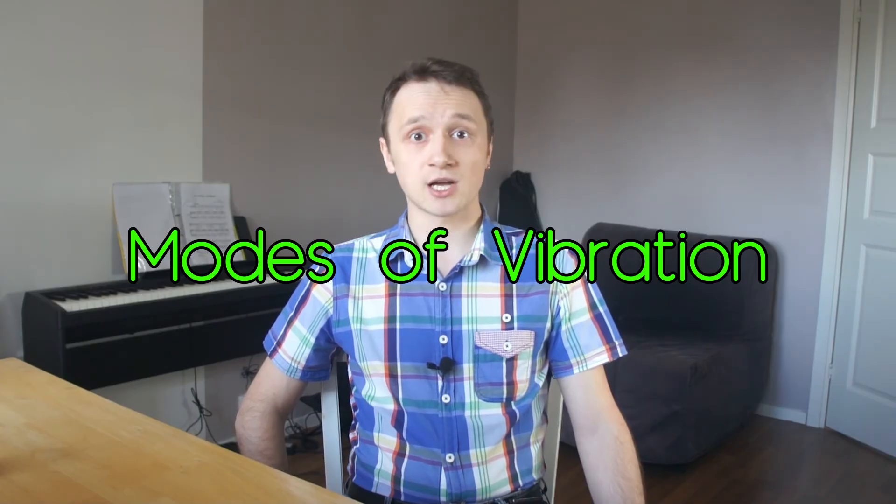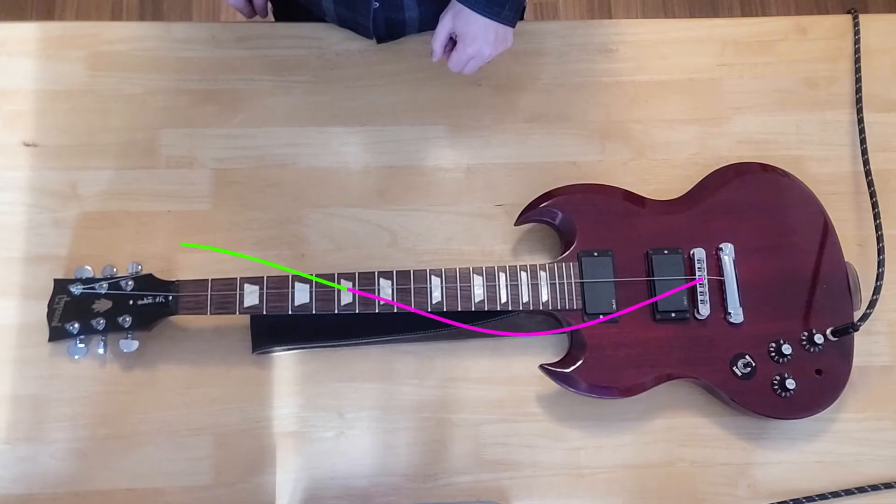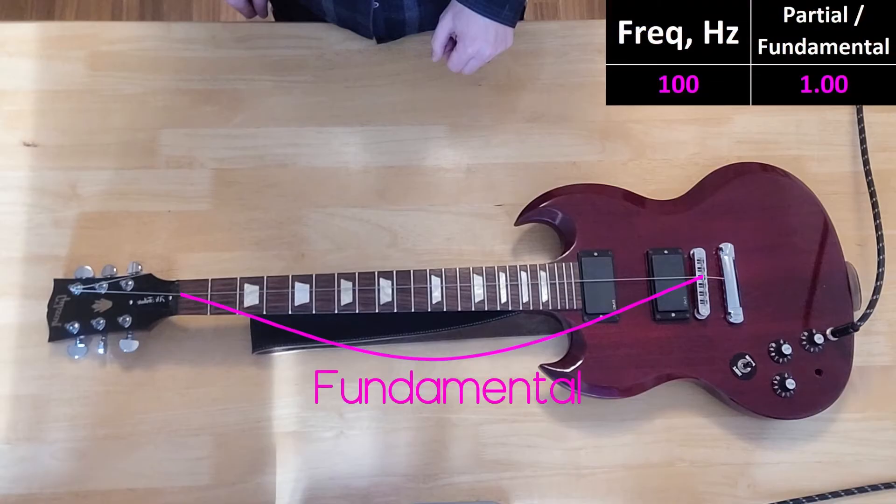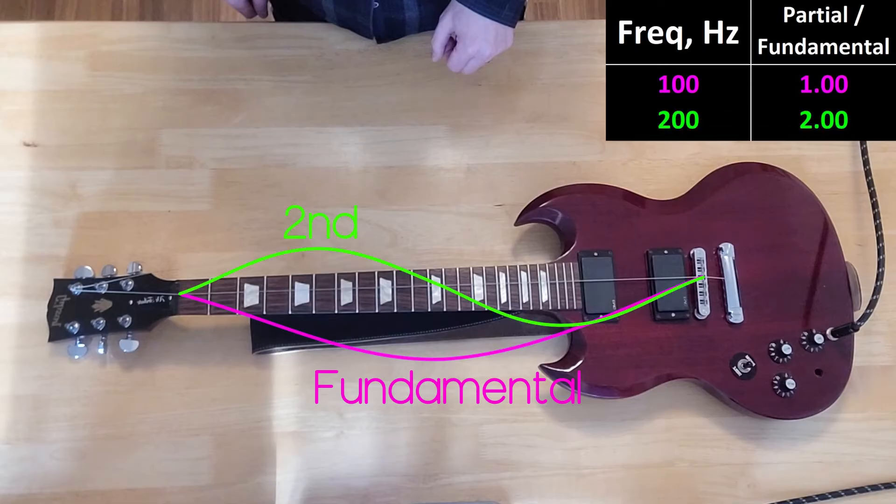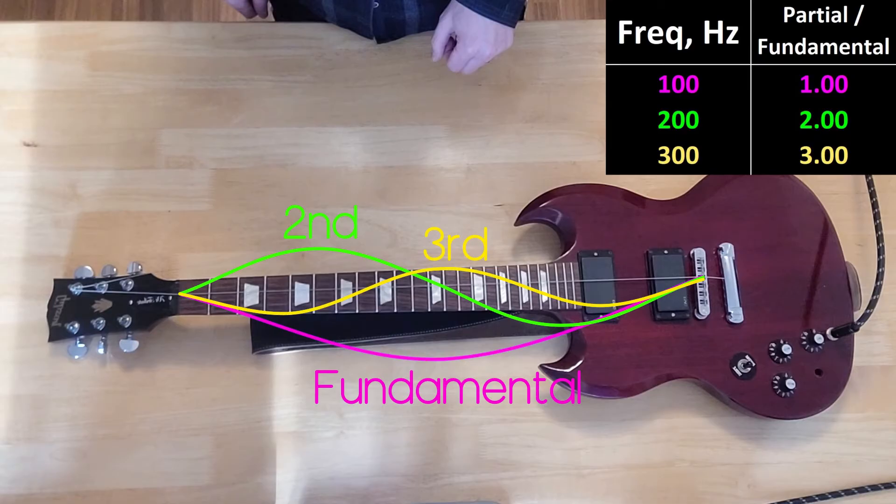The frequencies at which a string vibrates sustainably are called modes of vibration, and are such that half period of the vibration fits exactly inside the length of the string. Such frequencies are fundamental - exact numerical value depends on the length of the string and tension - second harmonic with twice the frequency, third with three times the frequency, and so on.